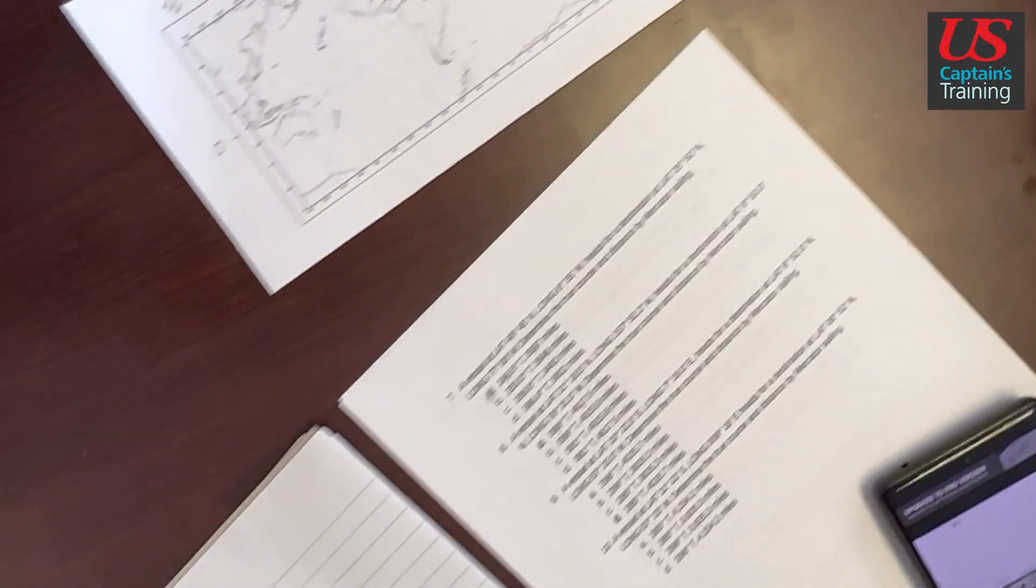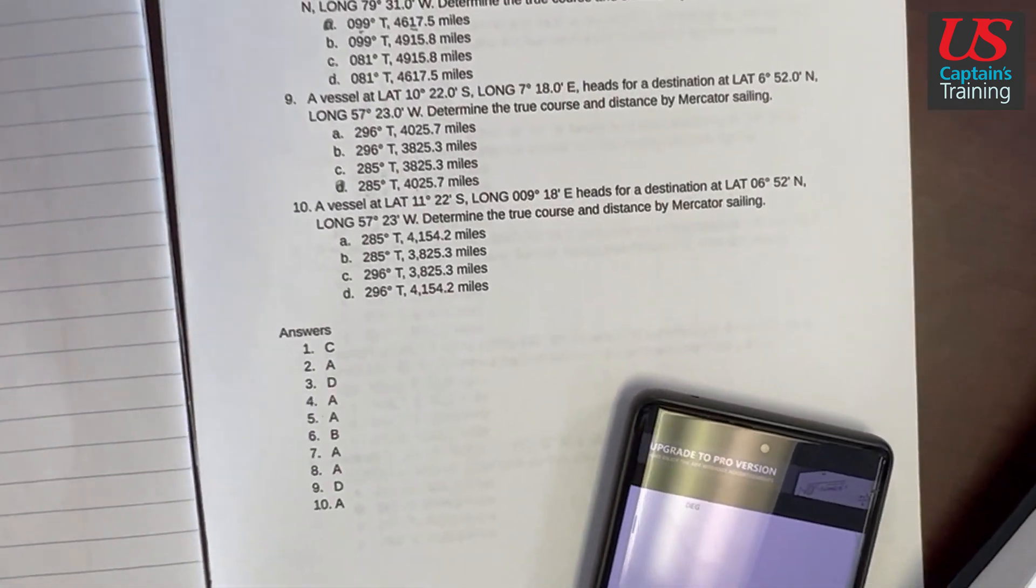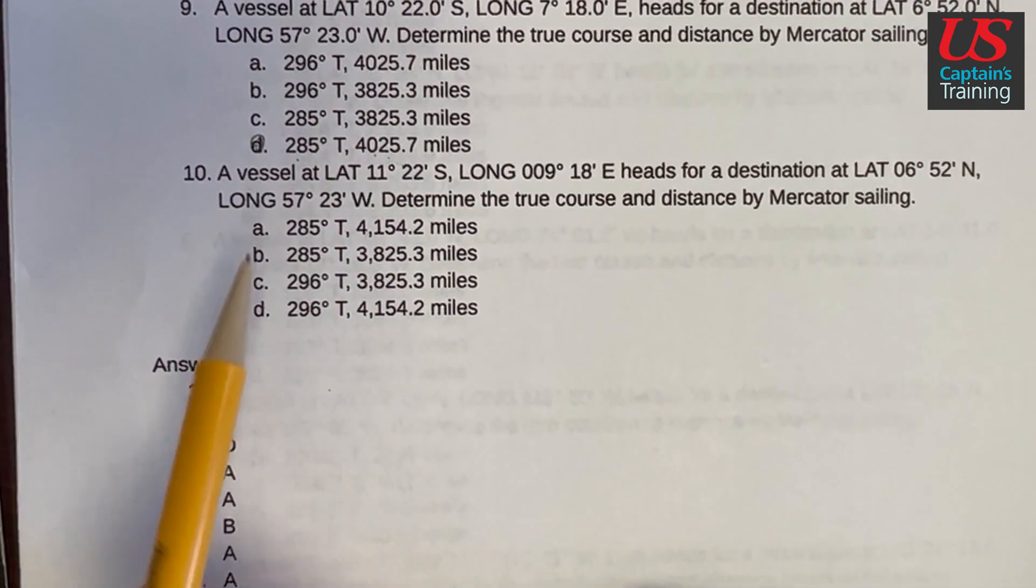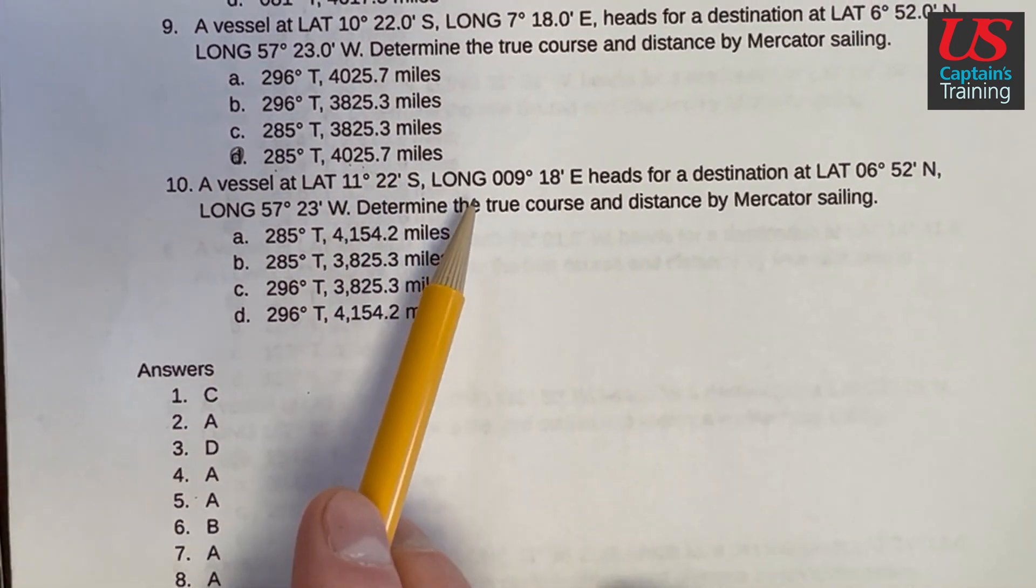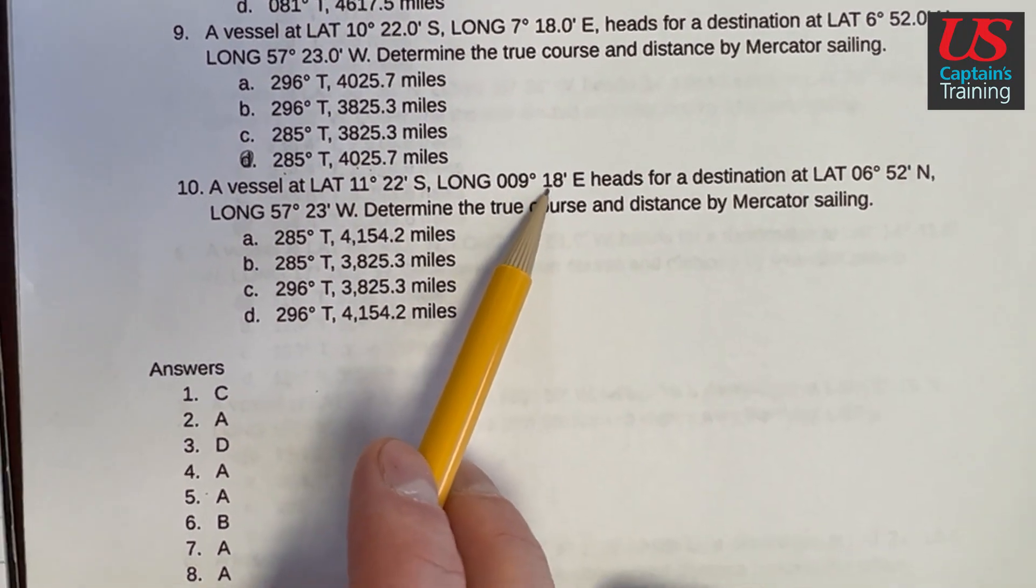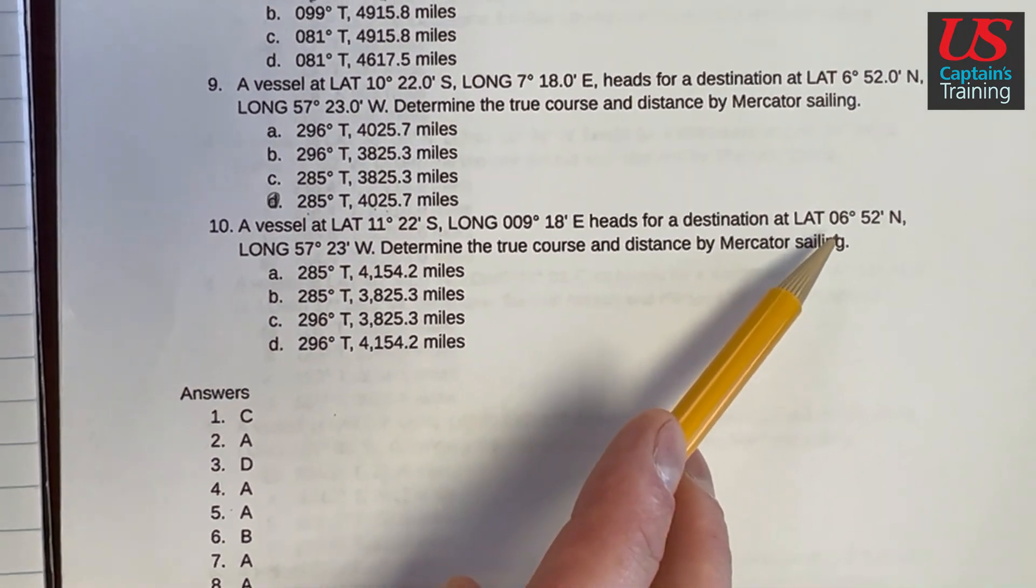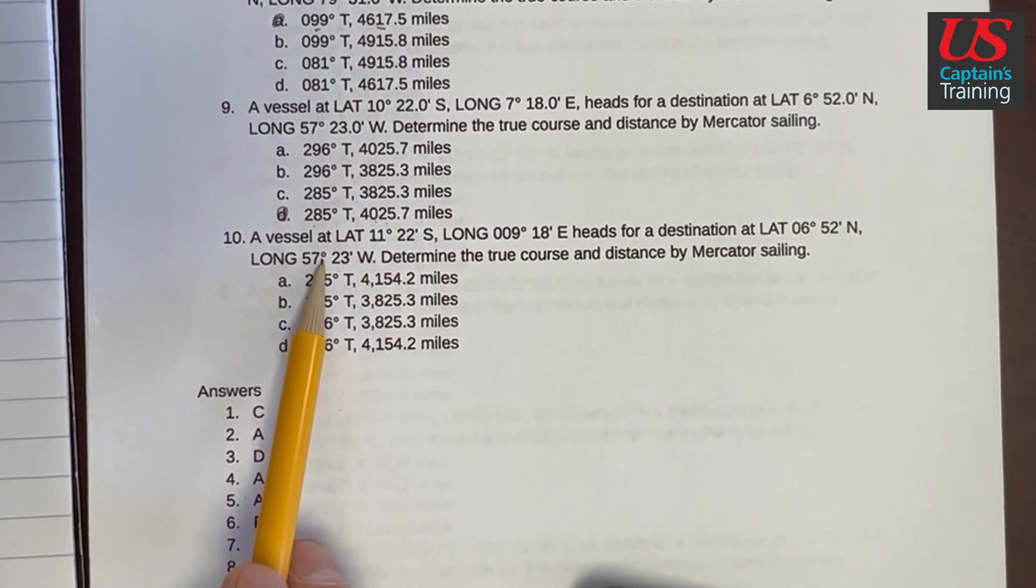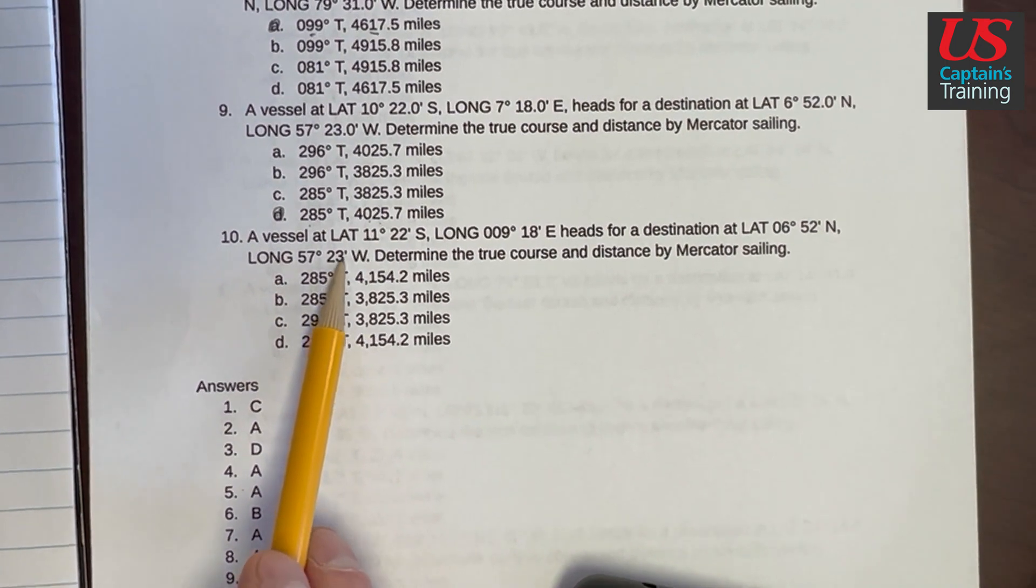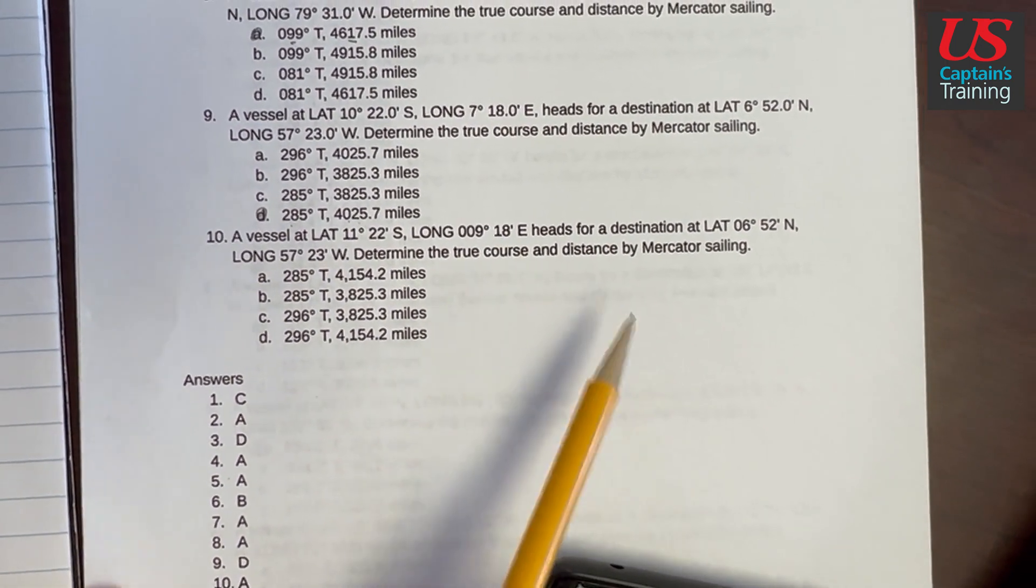Mercator Sailing practice problem 10. Here we go. Problem 10 reads: a vessel at latitude 11 degrees 22 minutes south, longitude 9 degrees 18 minutes east, heads for a destination at latitude 6 degrees 52 minutes north, longitude 57 degrees 23 minutes west. Determine the true course and distance by Mercator Sailing.